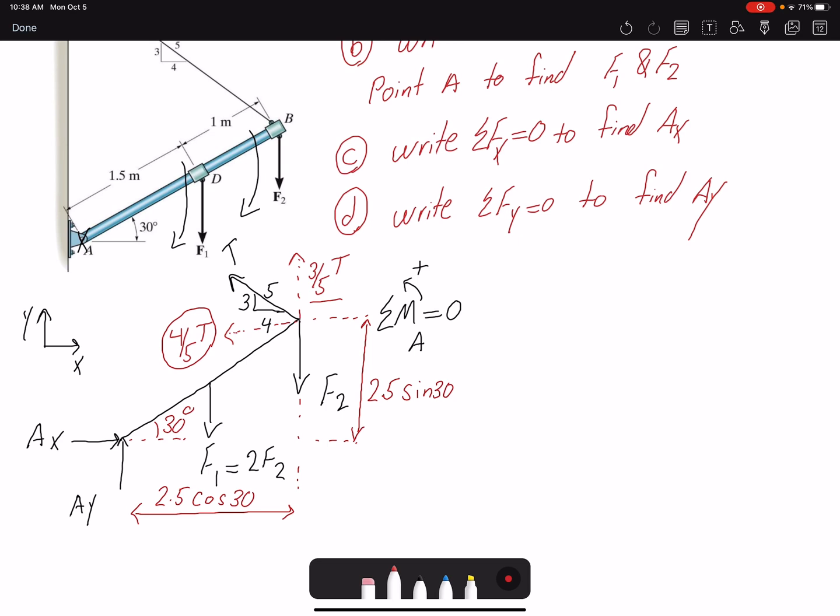Having all the forces and dimensions, I'm going to go ahead and write my moment equation. First F1, which is 2F2, is negative because it's going to create a negative moment. The moment arm for F1 is 1.5 meters, so that would be 1.5 cosine 30. Then I have my force F2, here is 2.5 cosine 30. Then the tension, which has magnitude 1500, 3/5 will give me the vertical component, 2.5 cosine 30.